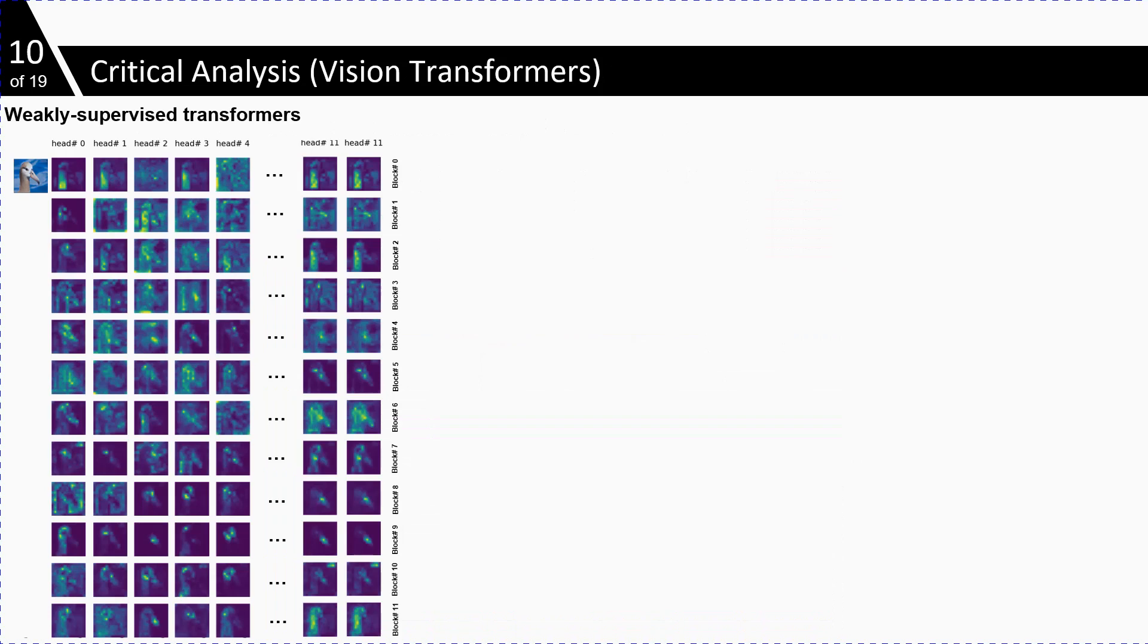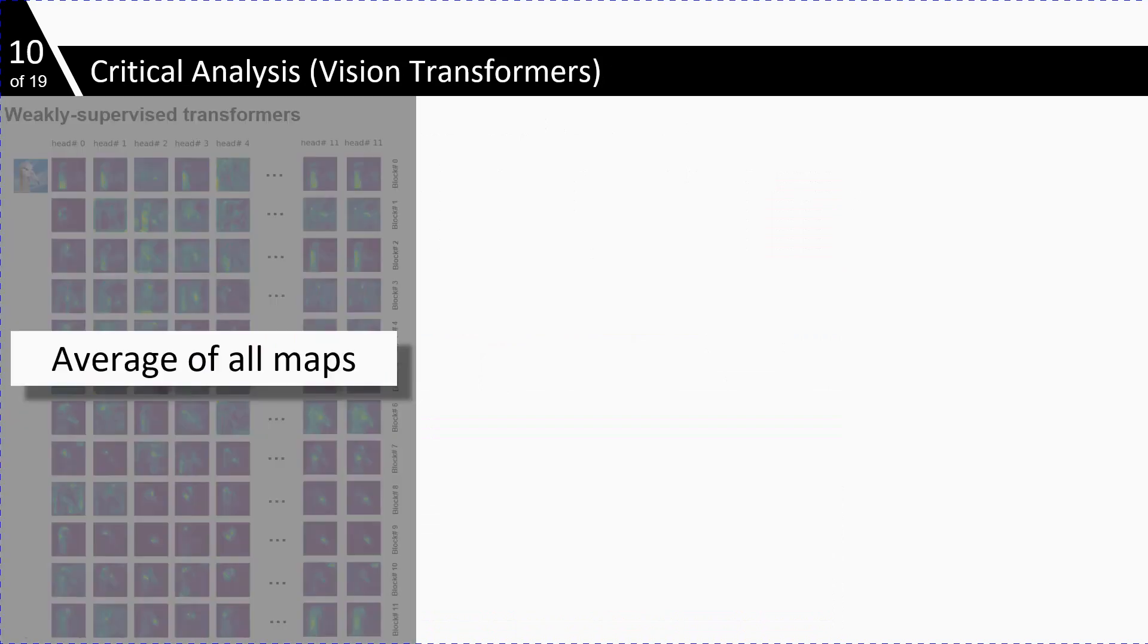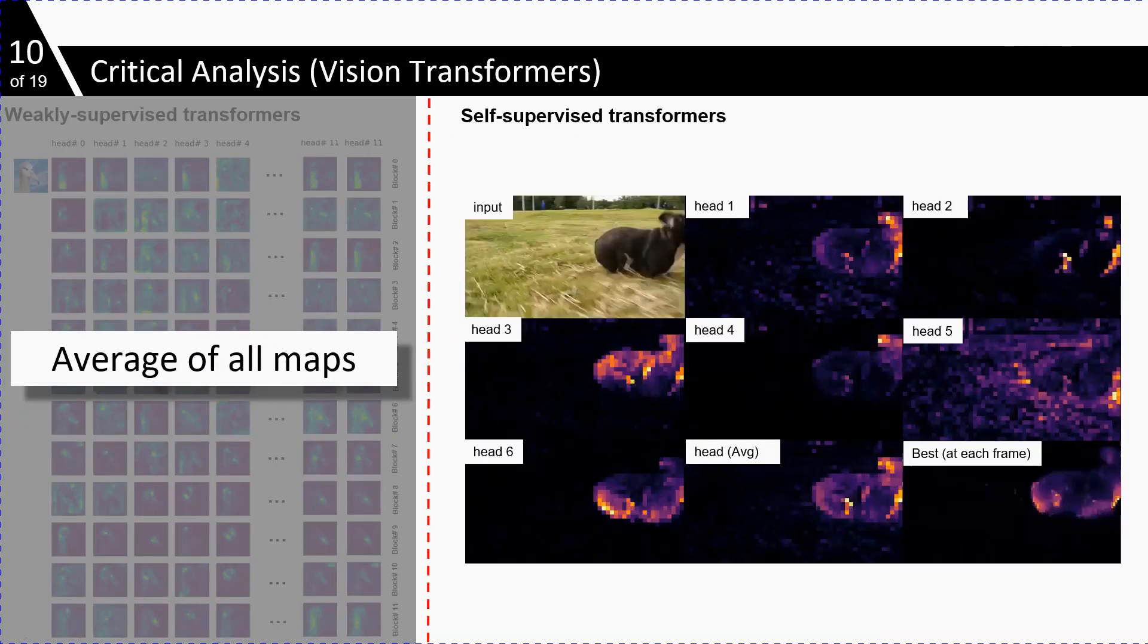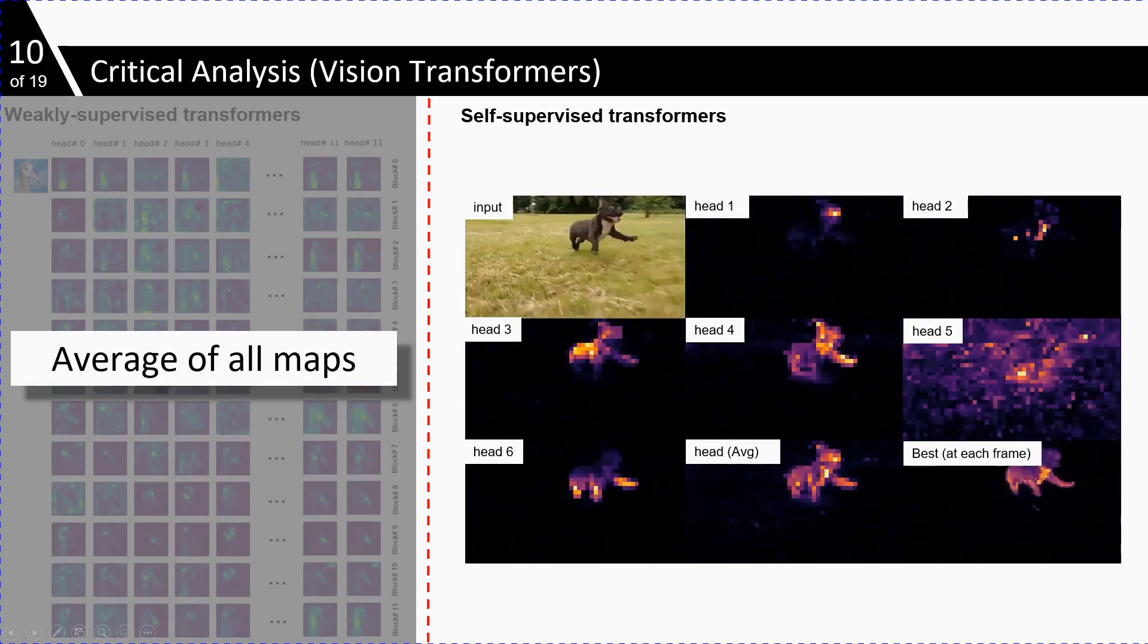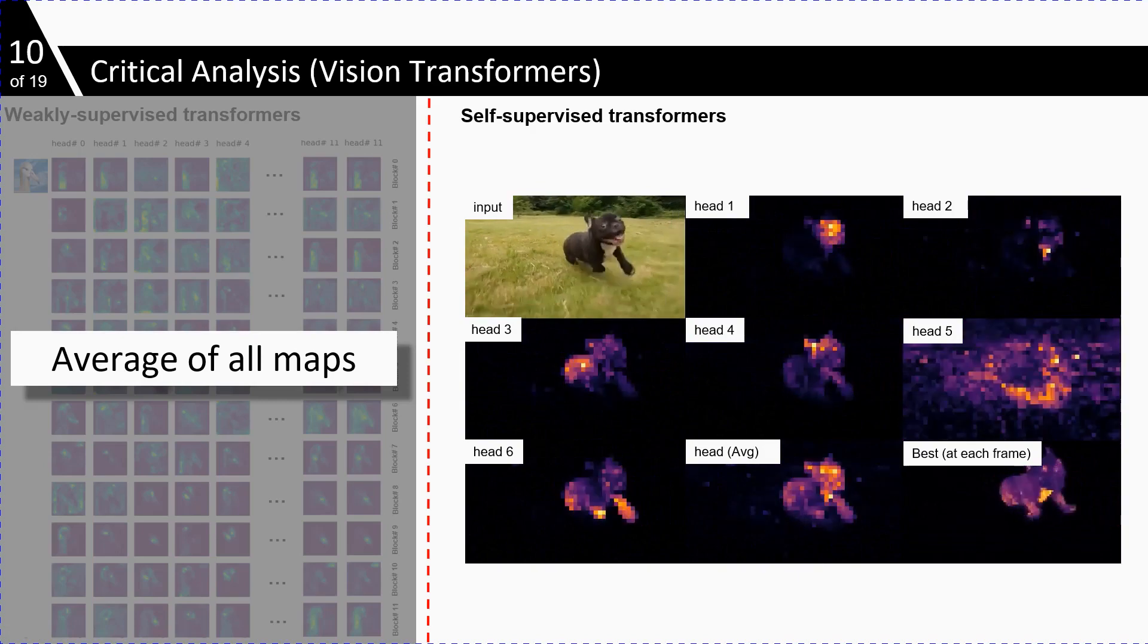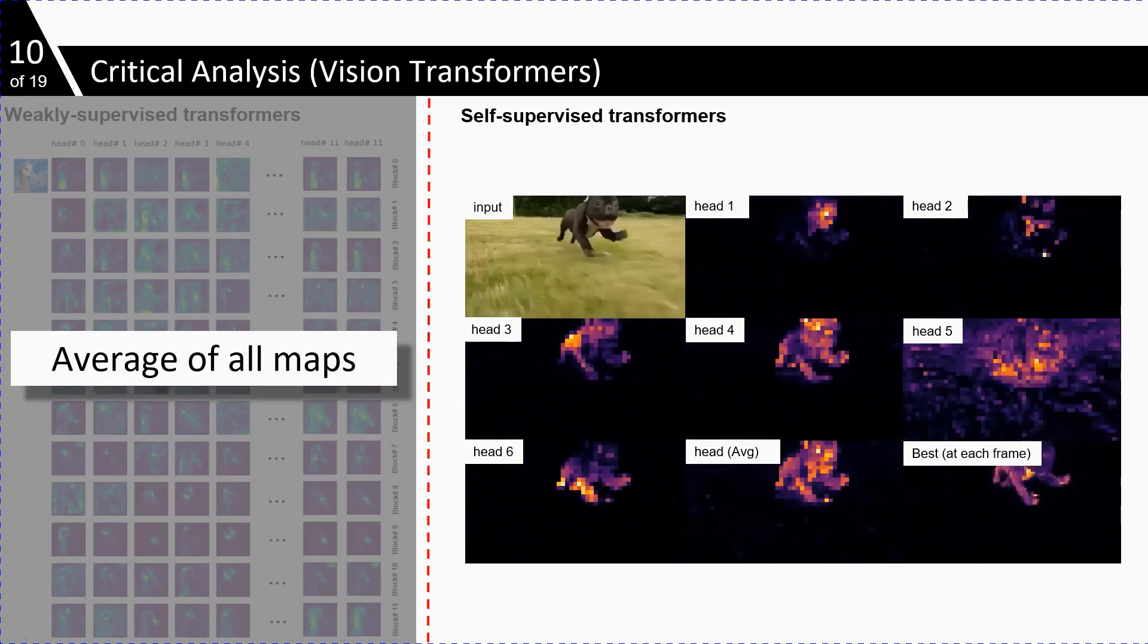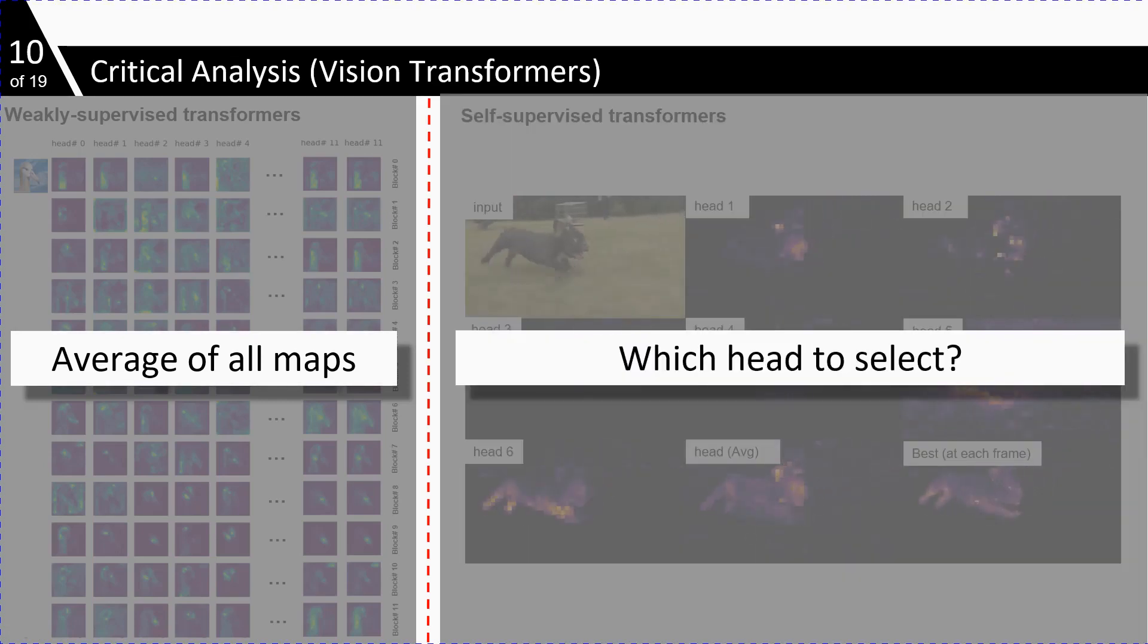Here is a detailed view of class attention maps extracted from transformers trained in weakly supervised fashion, where we have to take the average of all maps that lead towards noisy maps. Compared to this, self-supervised transformers are able to accumulate the whole information about the object in the last layer of the transformer. But there is no way to extract the best head.